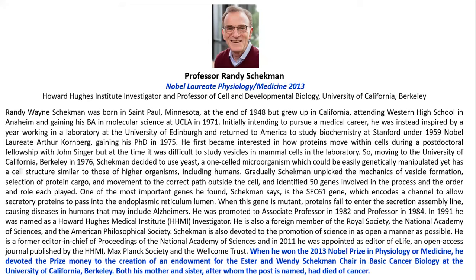He first became interested in how proteins move within the cell during a postdoctoral fellowship with John Singer, but at the time it was difficult to study vessels in mammalian cells. Moving to the University of California, Berkeley in 1976, he decided to use yeast, a one-celled microorganism easily genetically manipulated yet with cell structure similar to higher organisms including humans. He gradually unpicked the mechanics of vesicle formation, selection of protein cargo, and movement outside the cell, identifying 50 genes involved in the process. One of the most important genes he found is SEC61, which encodes a channel allowing secretory proteins to pass into the endoplasmic reticulum lumen. When this gene is mutant, proteins fail to enter the secretion assembly line, causing diseases in humans that may include Alzheimer's.